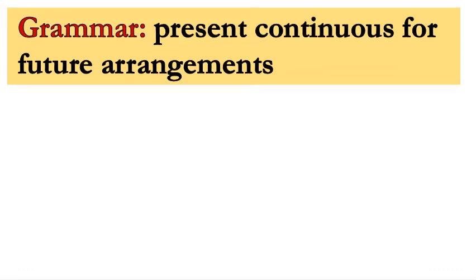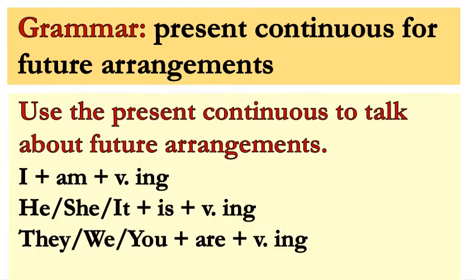Let's start and know how we use the present continuous for future arrangements. First, the formation: with the pronoun I, we add 'am' plus verb + ing. With the pronouns he, she, it — plus 'is' plus verb + ing. With the pronouns they, we, you — plus 'are' plus verb + ing.